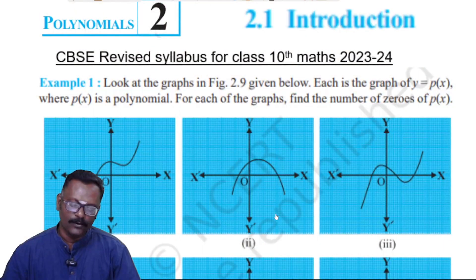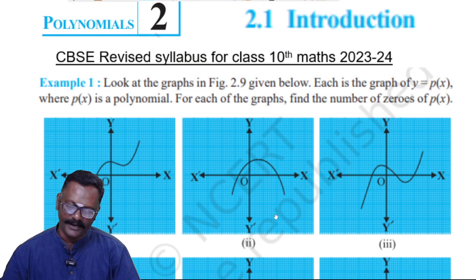Look at the graphs in Figure 2.9. Each is the graph of y equals p of x, where p of x is a polynomial. For each of the graphs, find the number of zeros of p of x.